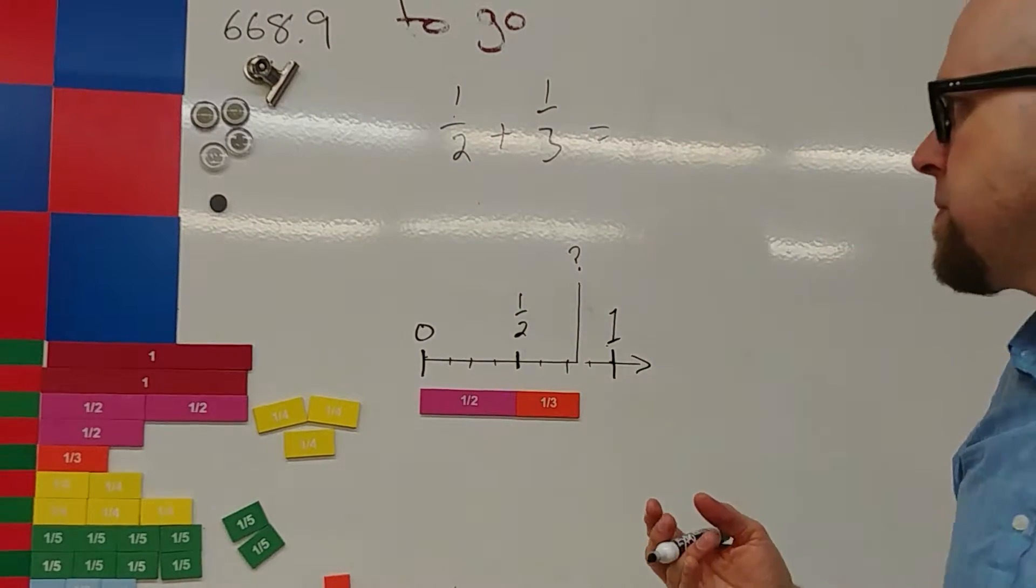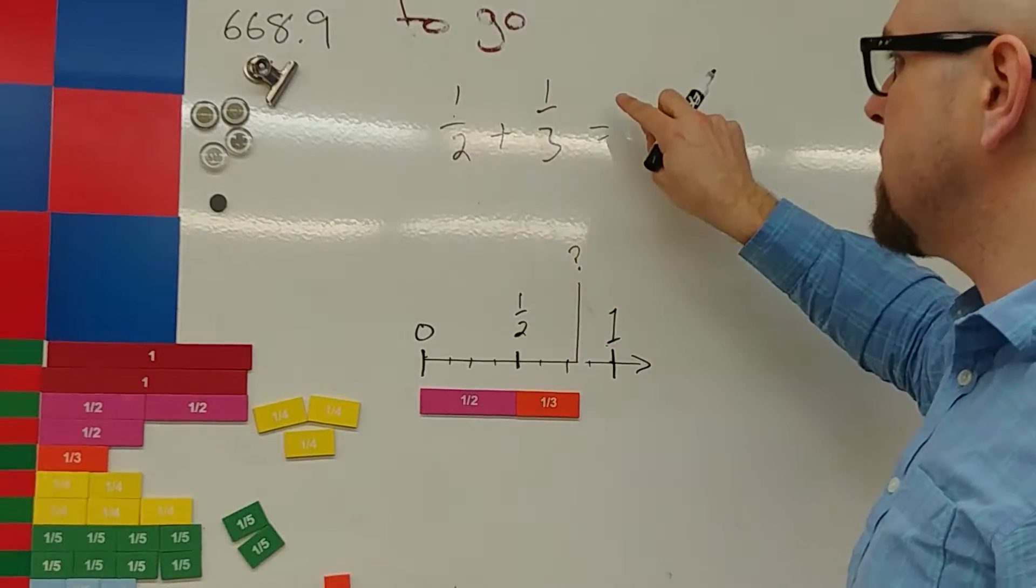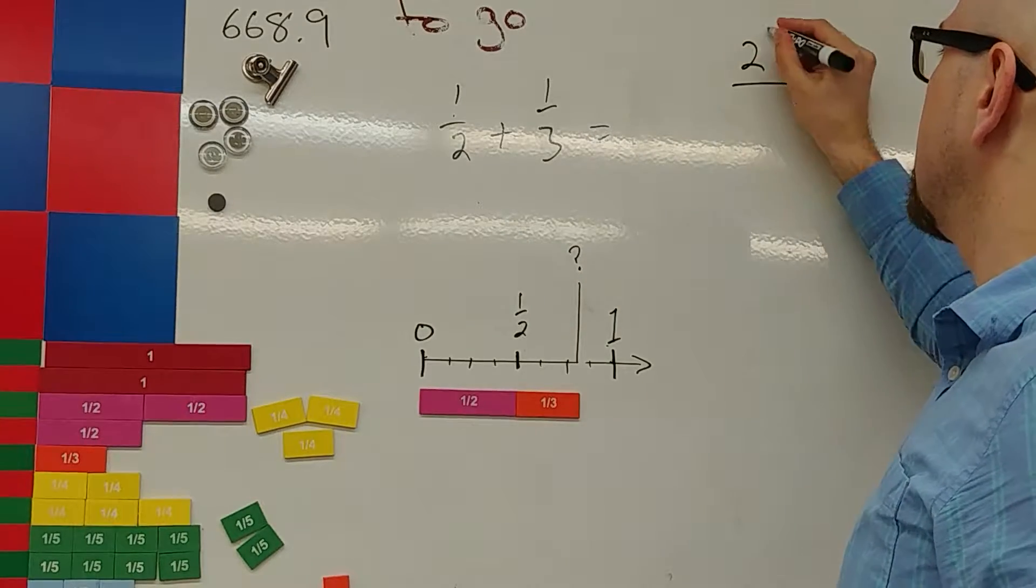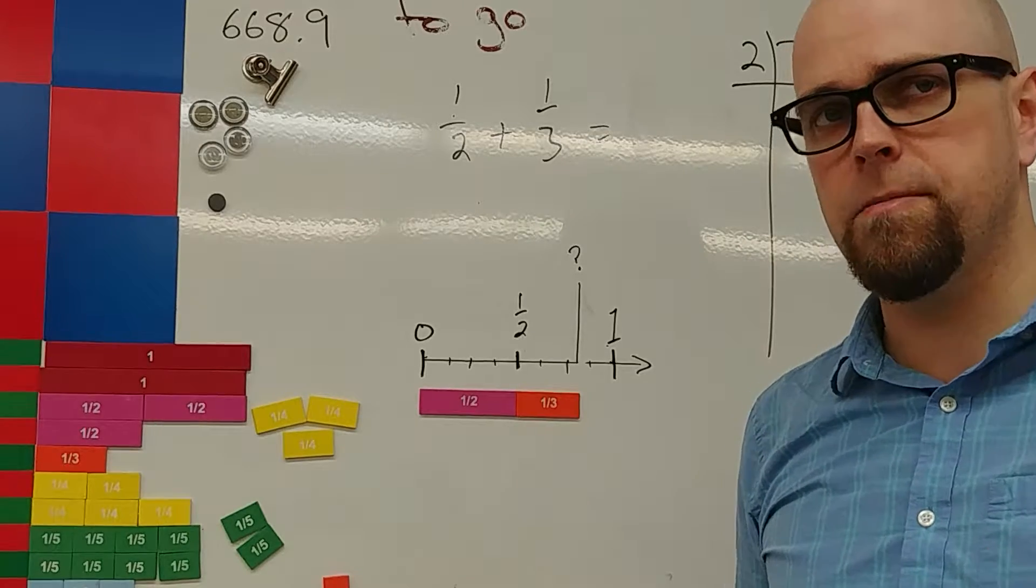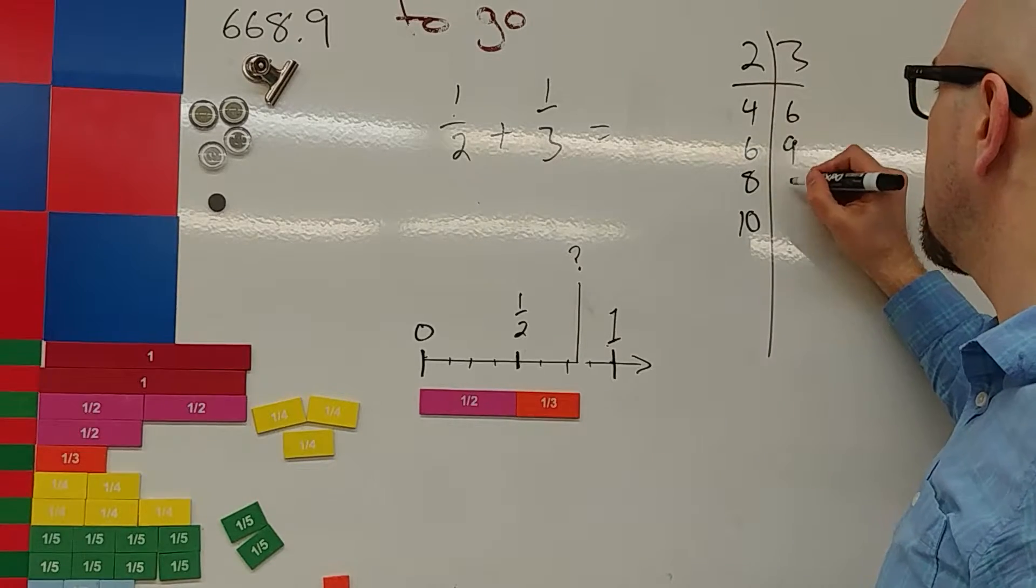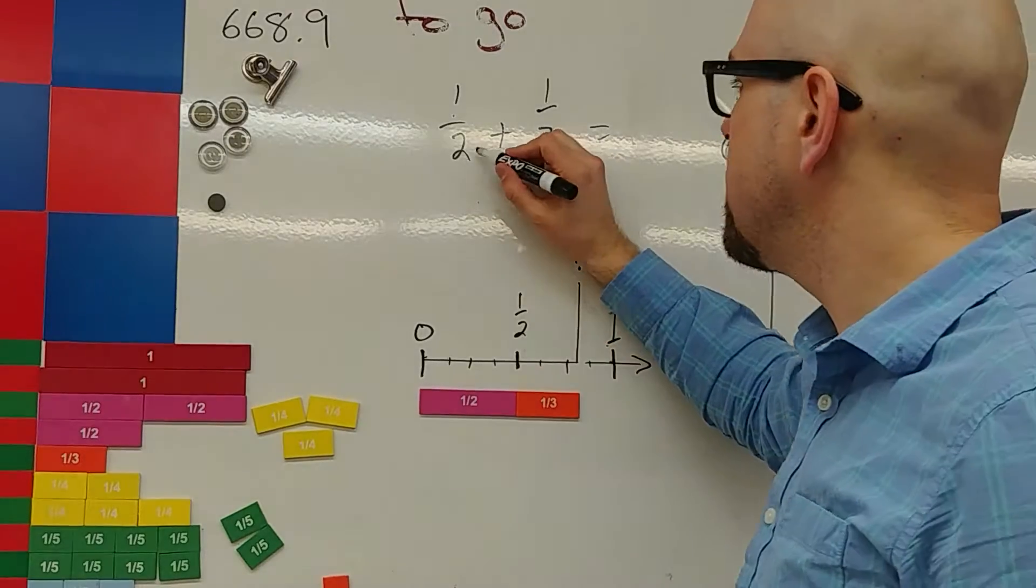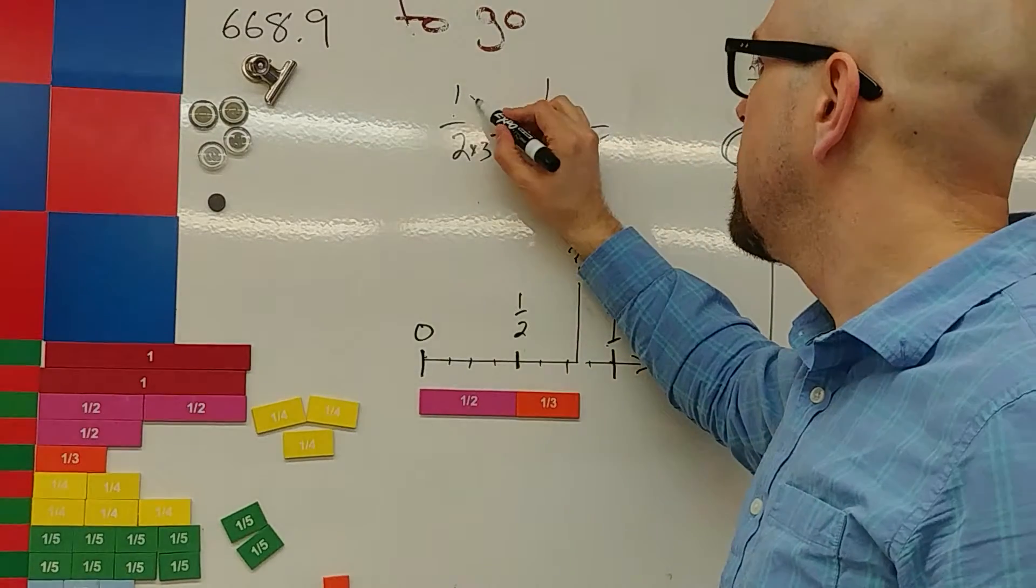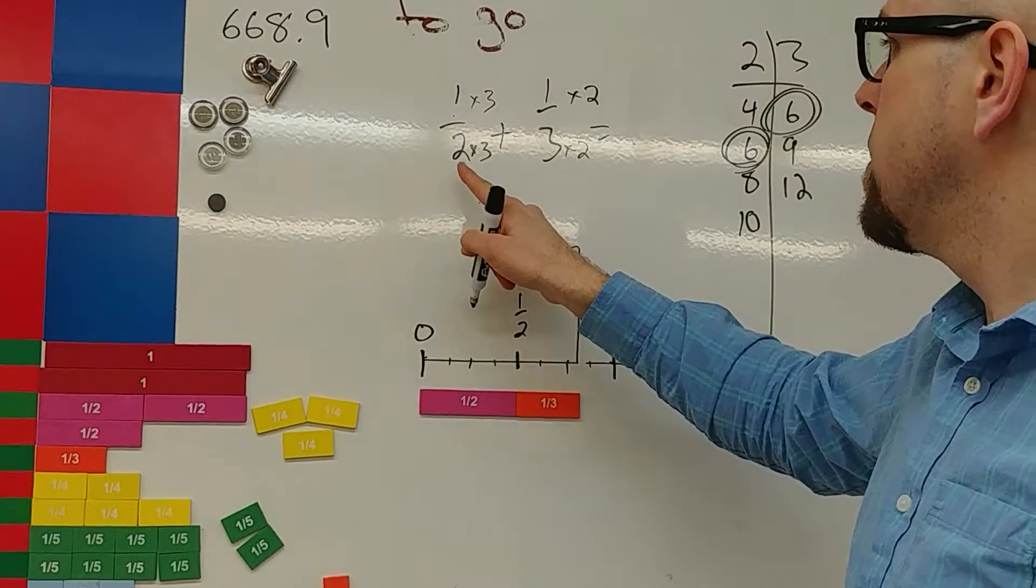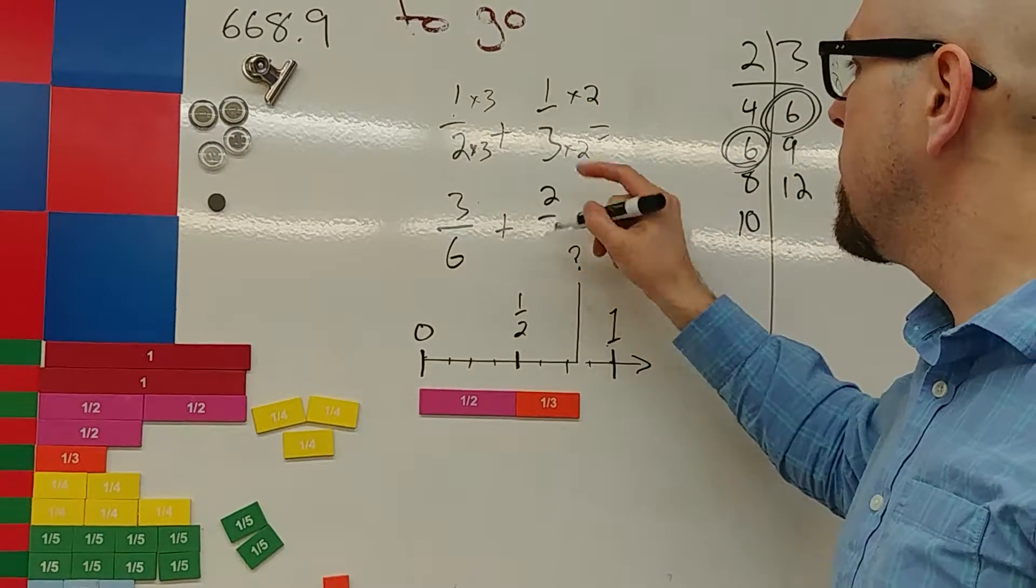So we've got half plus a third. Well, what I can do is I can convert so that the bottom is the same. Because I know that when I add fractions, I add only the top and leave the bottom the same. But if I add up only the top, do I use the two or the three? So what I'm going to do is I'm going to find a common multiple. A common multiple of two and three. I can see I have a common multiple. Six is happening for both of them. I know that three times two is six, and two times three is six. And I have to do the same to the top and the bottom. Two times three is six. One times three is three. Plus, one times two is two. Three times two is six.